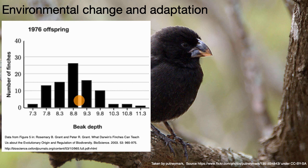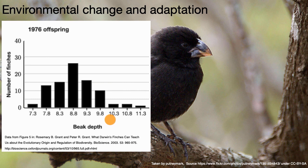After this data was collected, there was a drought and there were fewer seeds. The smaller seeds, which were easy to eat for all of these finches, would have been consumed quickly. All that would have been left were the larger seeds — the ones that require a larger beak in order to crack open and get at the good stuff.